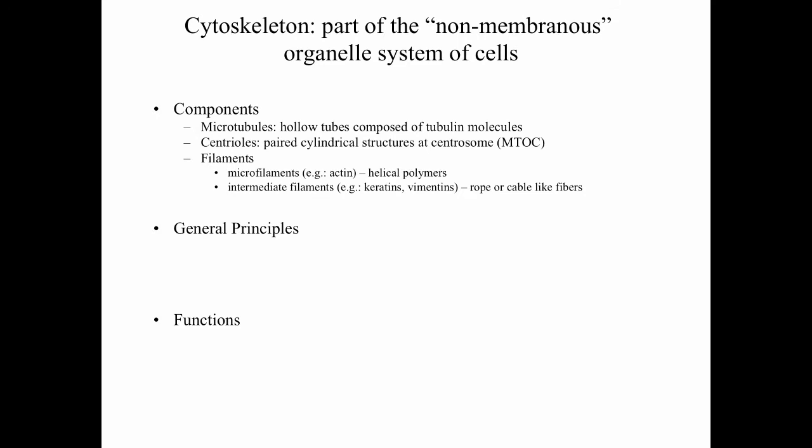There are microfilaments — a good example being actin — which are helical polymers. And there are intermediate filaments; two prime examples are keratins and vimentins. These are rope- or cable-like fibers.